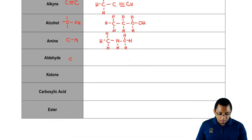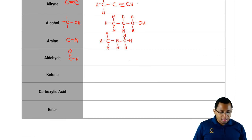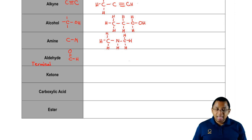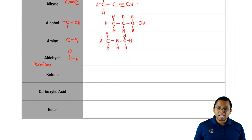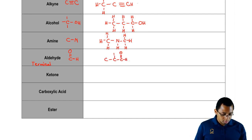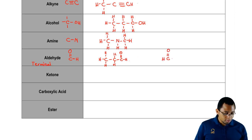An aldehyde — we have a carbon that is double bonded to an oxygen and single bonded to a hydrogen. This is called a terminal functional group, meaning it's going to be found at the end of our compound, either on the left end or the right end. That's what makes it an aldehyde.